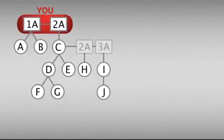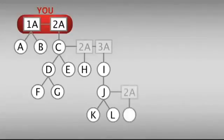So J, just like C, is another 3A distributor, with 1A line of K and L, 2A line of M, and 3A line of O.